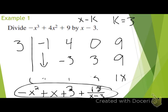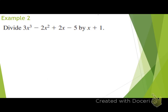The more times you do it, the easier it becomes. Our next problem: divide 3x cubed minus 2x squared plus 2x minus 5 by x plus 1. Remember, our first step is to check our divisor and see if we're even able to use synthetic division. What is my divisor? x plus 1. Is that an okay form? Yes. If our divisor does not take on the correct form, then we have to use long division. We can't use synthetic division any other time.